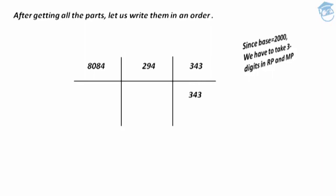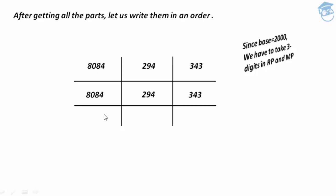Moving to the middle part, we have 294, which is a 3-digit number, written below the horizontal bar as is. Finally, the left part is 8084, also written as is below the horizontal bar. By placing one more horizontal bar and clubbing all parts — left, middle, and right — we get the final answer: 8 billion 84 million 294 thousand 343.